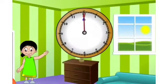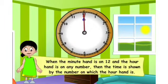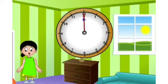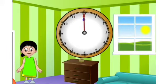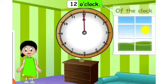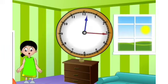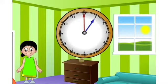Here is a clock. Can you read the time from this clock? When the minute hand is on 12 and the hour hand is on any number, the time is shown by the number on which the hour hand is. Here the hour hand and the minute hand both are on 12, so the time shown by the clock is 12 o'clock. O'clock is the short form of 'of the clock'. As the minute hand completes one round, the hour hand moves to the next number, that is 1, so the time will be 1 o'clock. It means one hour is complete.